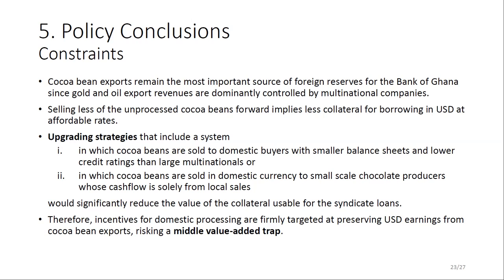Looking at policy conclusions: the key constraint is that Ghana's cocoa beans remain the most important source of foreign exchange for the Bank of Ghana, because investors in the gold and oil sectors are largely dominated by multinational firms. The government's shareholding in gold and oil is relatively low, and the permissibility for these players to repatriate revenue takes a hit on the Bank of Ghana's foreign reserve management.